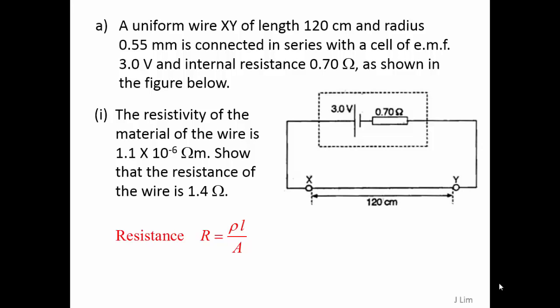The resistance of the wire is given by ρL over A. Substituting values, we get a resistance of 1.39 ohms.